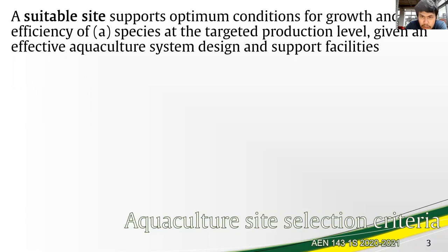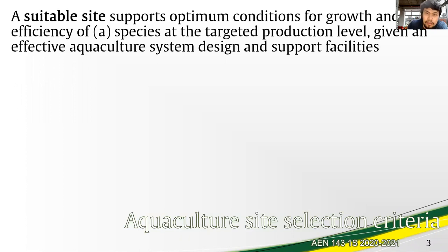The interventions to be introduced will cover the design of the aquaculture setup and the support facilities. Based on the definition, two conditions or criteria have to be initially met: for the site to fit the species and the targeted level of production.